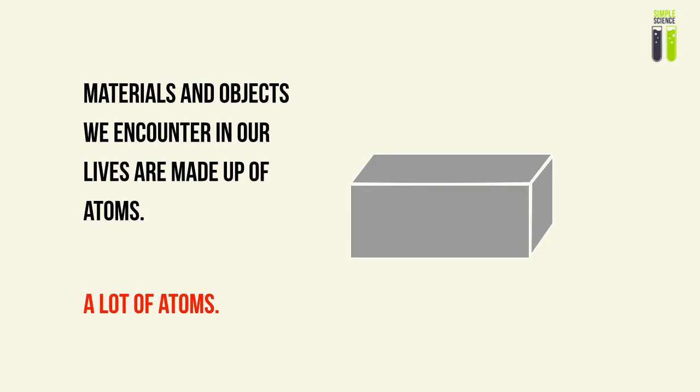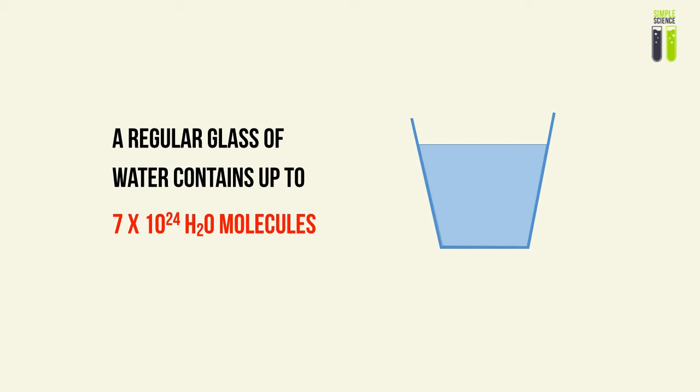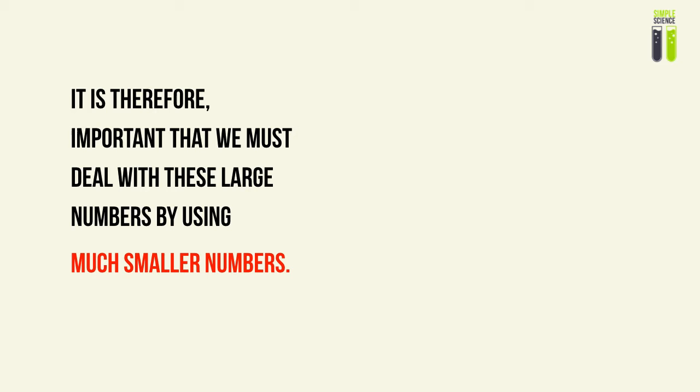In our universe, the materials and objects we encounter are made up of atoms. Take for example a piece of iron — it is made up of a very large number of iron atoms. To put things into perspective, a regular glass of water will contain up to 7 times 10 to the 24 water molecules. That is 7 trillion trillion, or 7 million billion billion molecules. That's a lot of molecules! So it is very important that we deal with these large numbers using much smaller numbers.